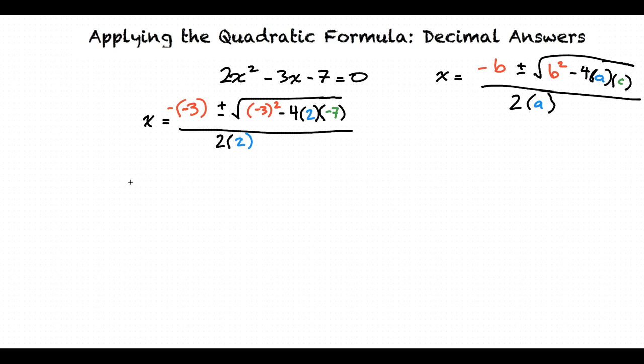We will now do some quick simplification. x equals negative negative 3 is just 3, plus or minus negative 3 squared is 9, minus 4 times 2 is 8, times negative 7 is negative 56, all over 2 times 2, which is 4.